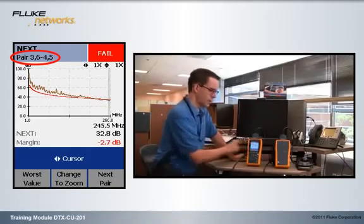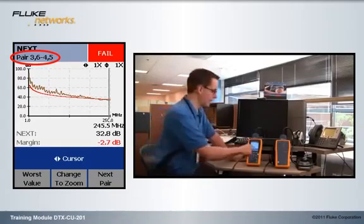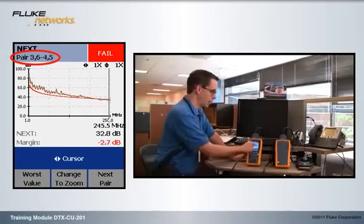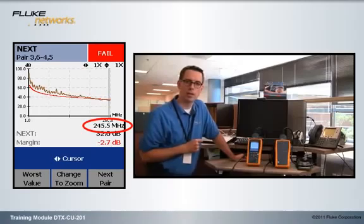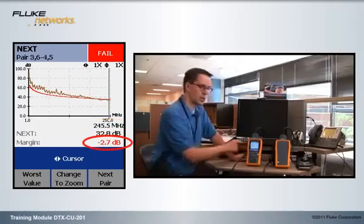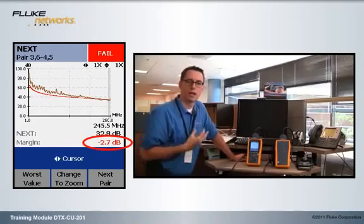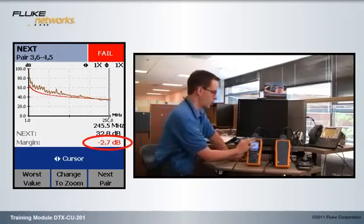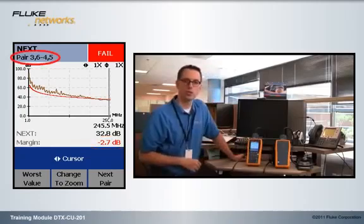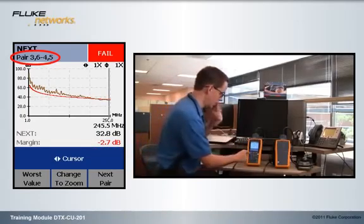The squiggly line is our crosstalk measurement. And that needs to be above the line. But we see that around 245.5 MHz it dipped below the limit line, giving us a negative 2.7 dB margin. But as I said, for this diagnostic sequence, we don't need to know that. We just need to know 3645.